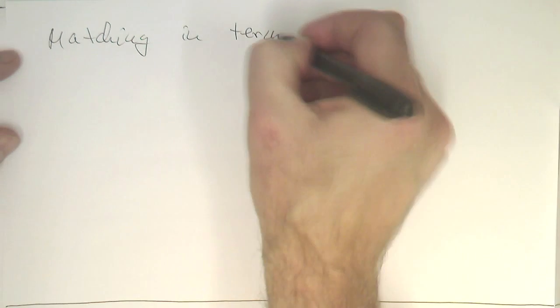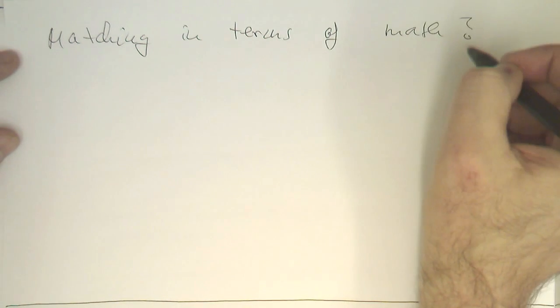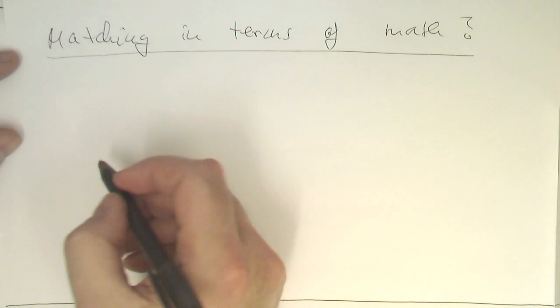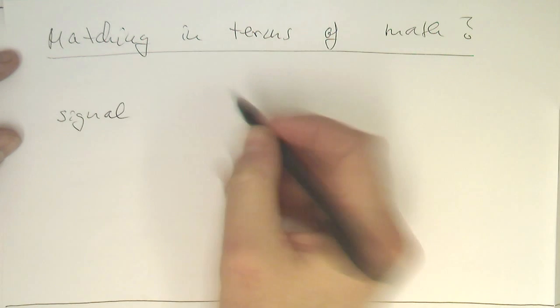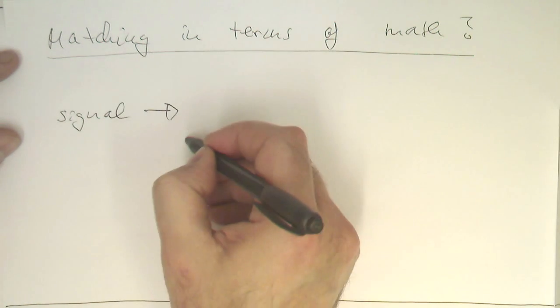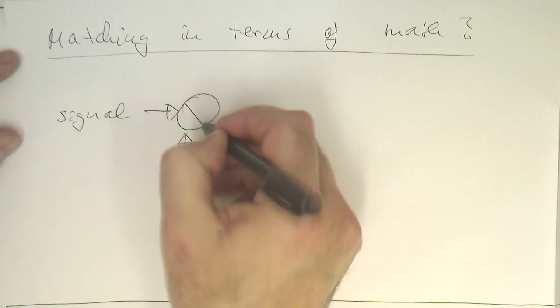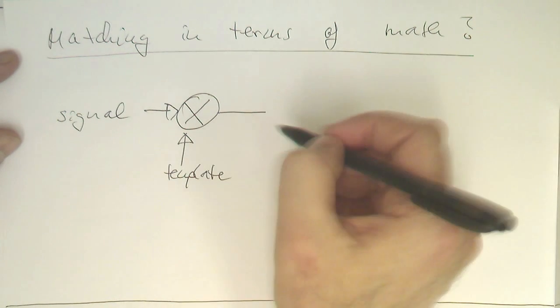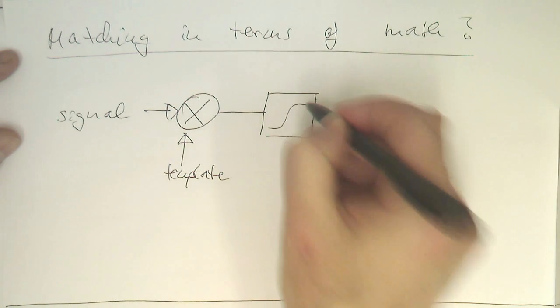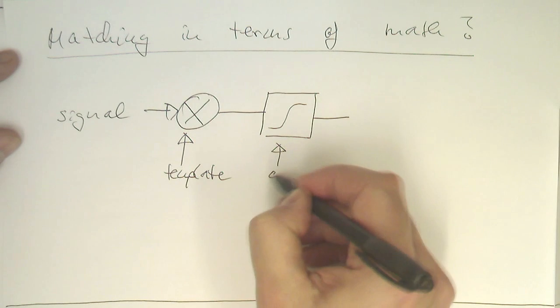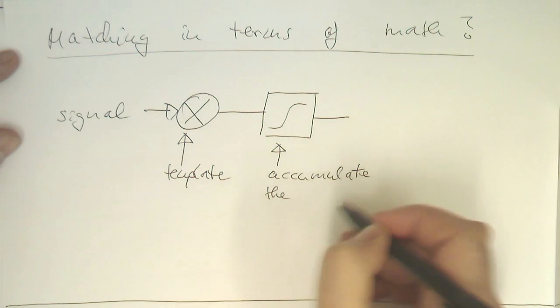Matching in terms of math. And that's very simple. We have our signal and we've got our template. We just multiply these two ones with each other. And then we accumulate this product here. Accumulate the product.